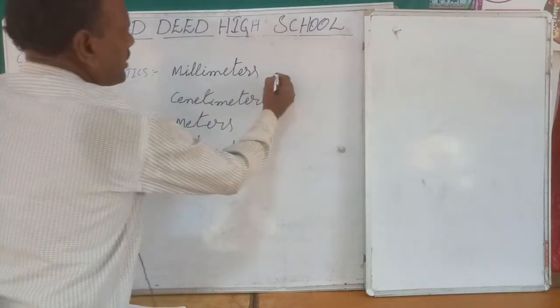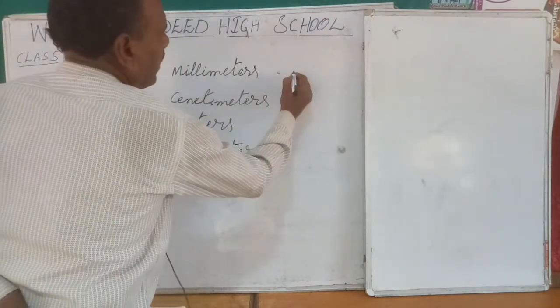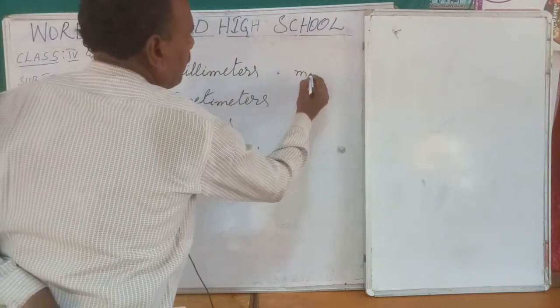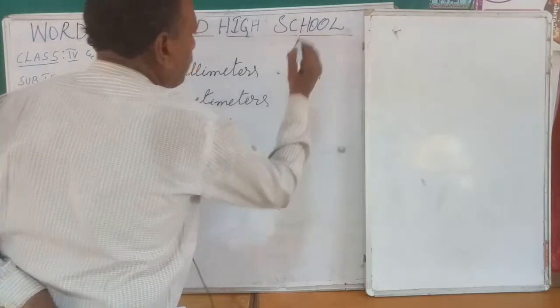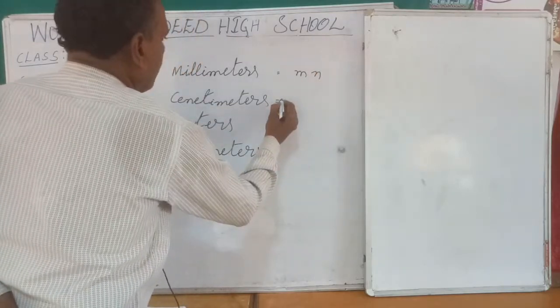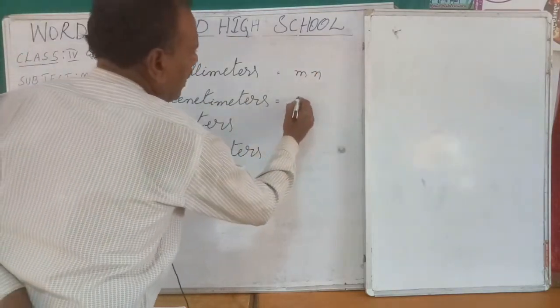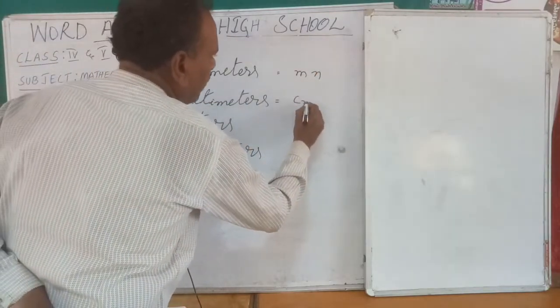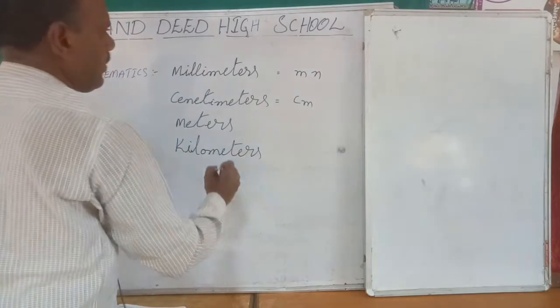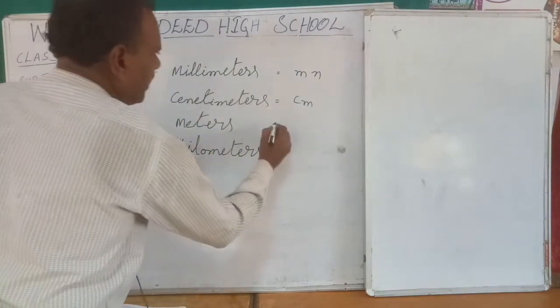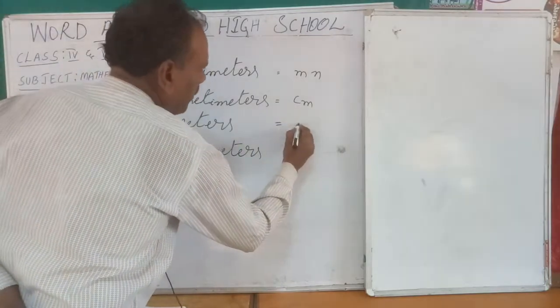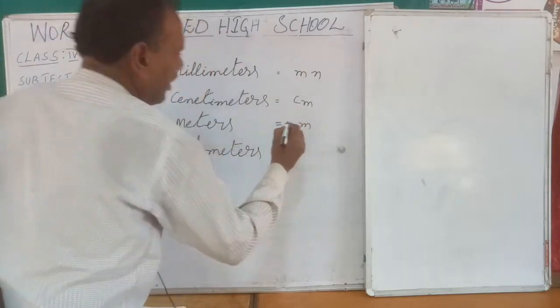Millimeters is denoted by mm. Centimeters is denoted by cm. Meters is denoted by m.